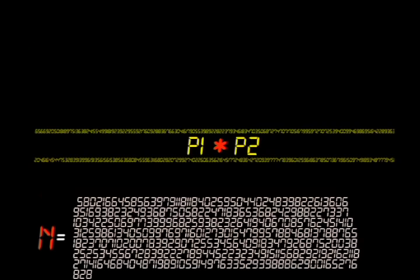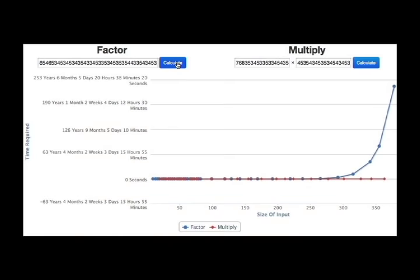Then she takes the factorization of N, P1 times P2, and hides it. Now if she gave N to anyone else, they would have to have a computer running for years to find the solution.